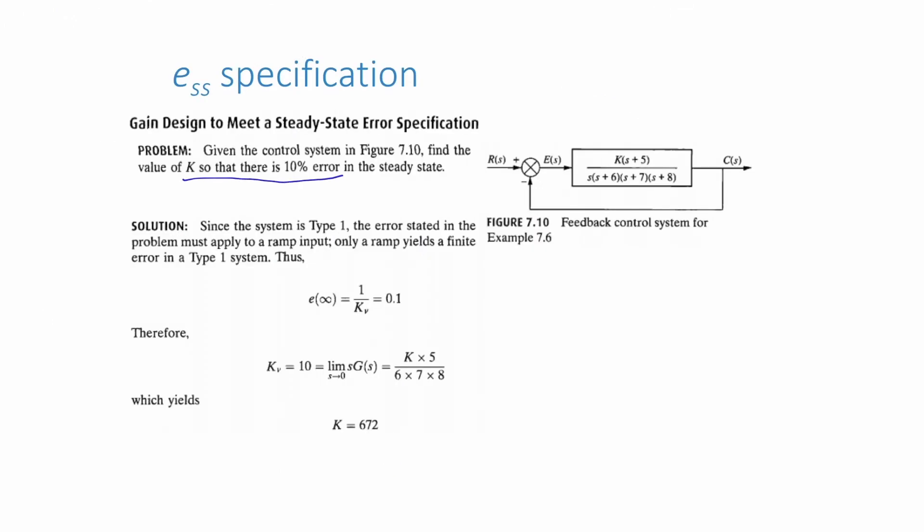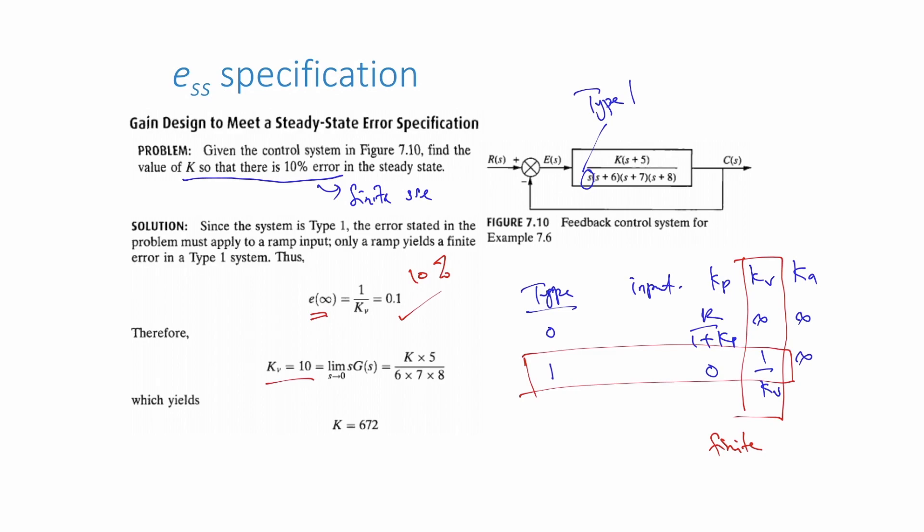Next, we can also calculate the gain for a given steady state error. Say, the error for a system is 10%. We know that it will yield some finite values. Thus, for a type 1 system, the test signal must be a ramp. We then can calculate the value of Kv and consequently use that value to calculate the gain k.